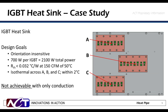Let's take a look at a case study. This is a heat sink designed to cool three IGBT modules. The design goals are: it needs to operate insensitive to orientation, it needs to effectively dissipate 700 watts from each module, totaling 2,100 watts total. There was a goal for thermal resistance to be lower than a certain value at 150 CFM airflow at 50°C. And device case temperatures at the attachment points A, B, and C need to be isothermal to within 2°C.